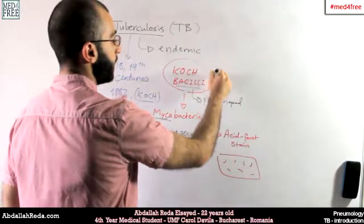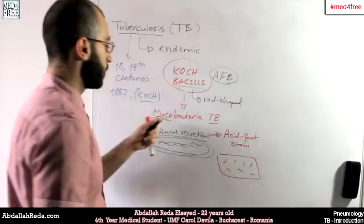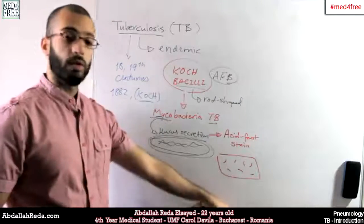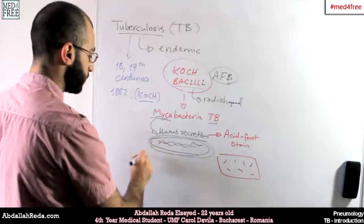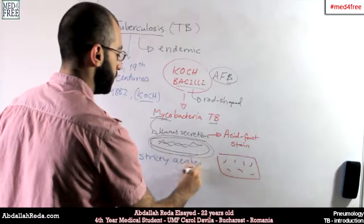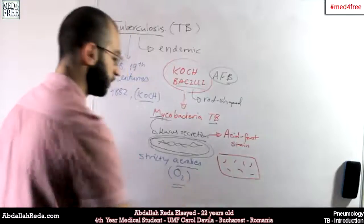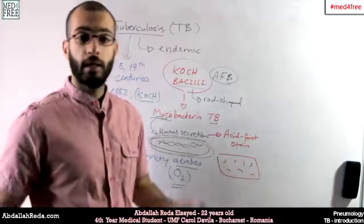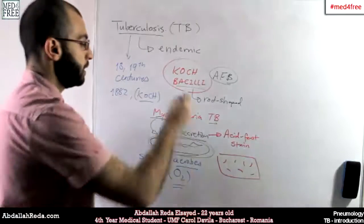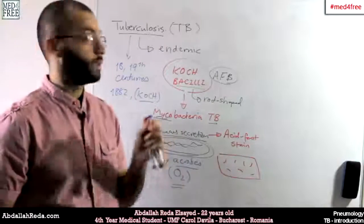This is why they are also called acid-fast bacilli — so Koch bacilli, acid-fast bacilli, or MTB, Mycobacterium tuberculosis. A very important characteristic is that they are strictly aerobic, meaning they need oxygen to survive. Without oxygen they die. They strictly need oxygen to survive.